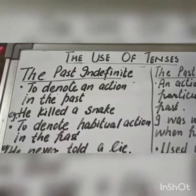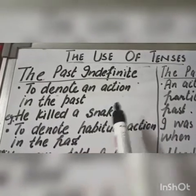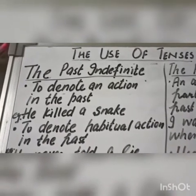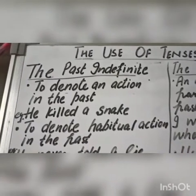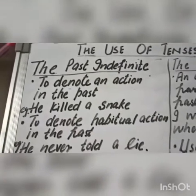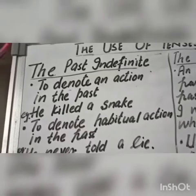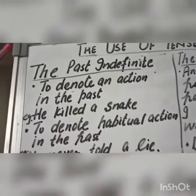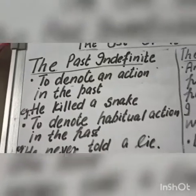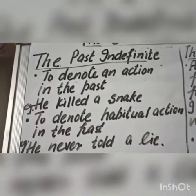Past Indefinite Tense: this tense denotes an action in the past. For example, 'He killed a snake.' It is also used to denote habitual action in the past. For example, 'He never told a lie,' or 'He came to me every evening,' 'He studied many arts every day.' This means he is not doing all these things now but had done them in the past.